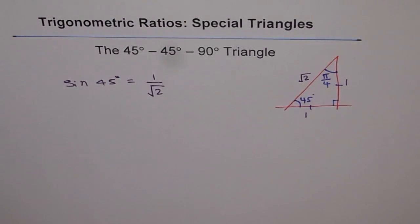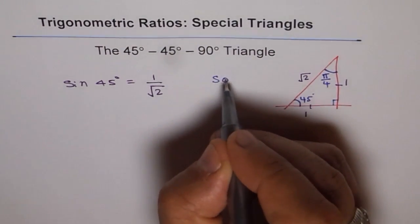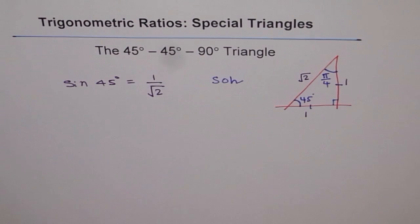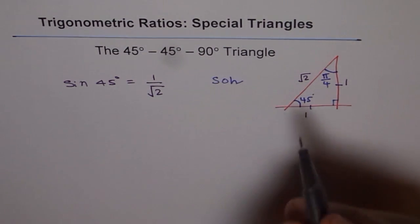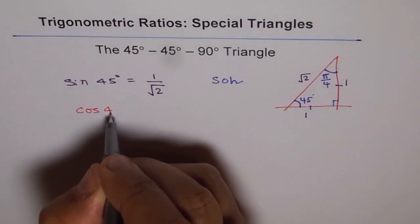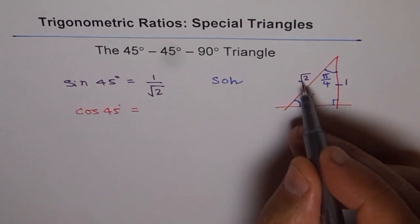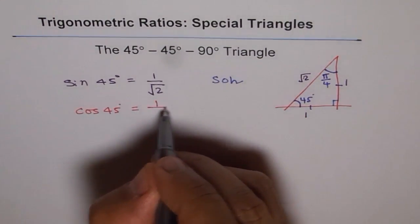Now let's figure out what is cos of 45. Cos of 45 degrees is equal to adjacent over hypotenuse which is 1 over square root 2. You can remember cos is adjacent over hypotenuse.